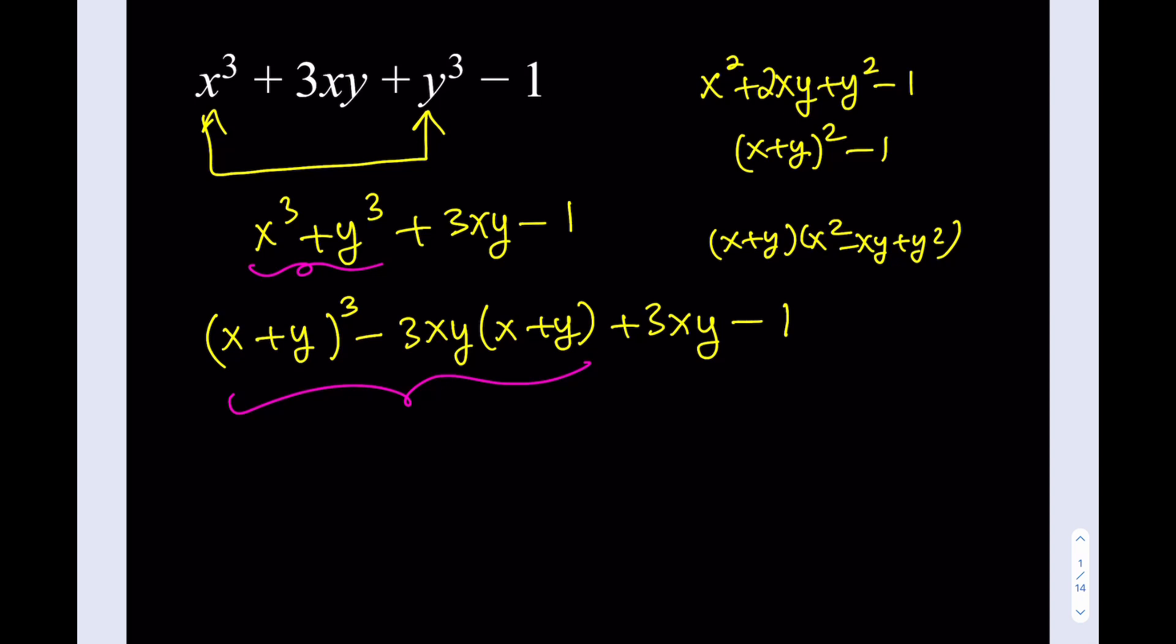And the two terms in the middle, they have something in common. They have 3xy in it, right? So what I'm going to do is I'm going to move this stuff around a little bit. So I'm going to write it this way. x plus y quantity cubed minus 1 minus 3xy multiply by x plus y plus 3xy.